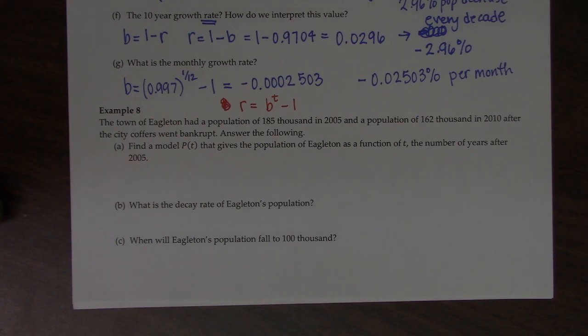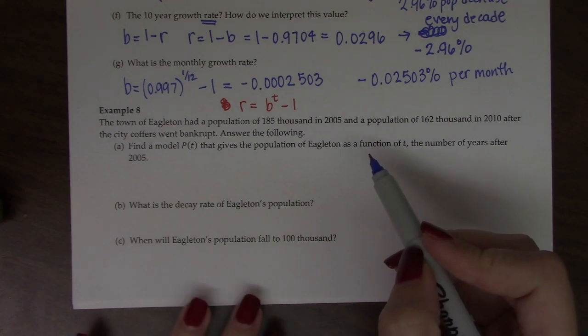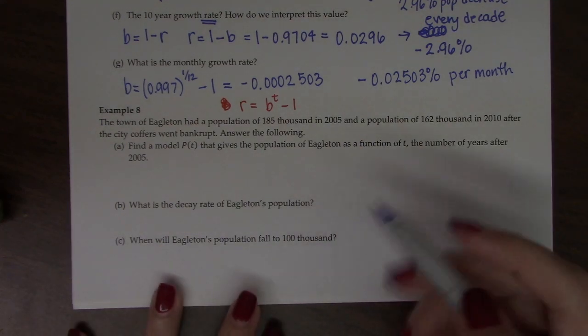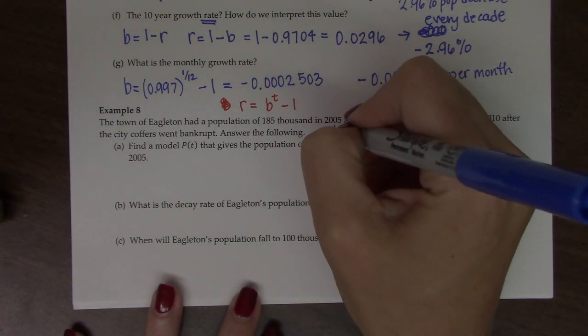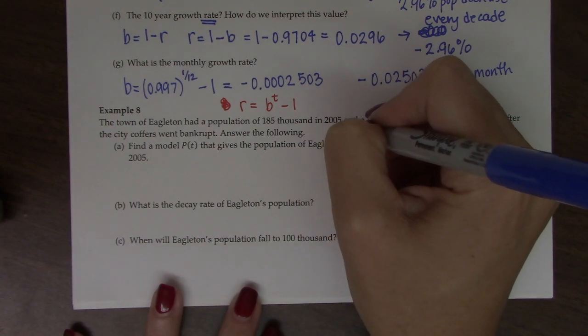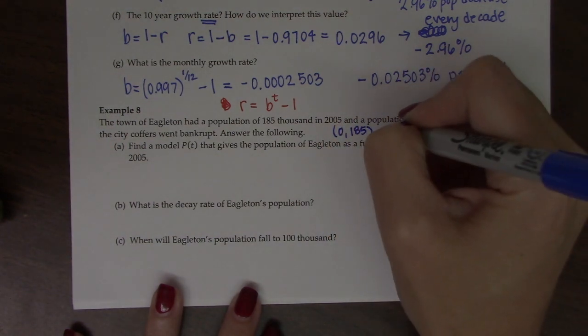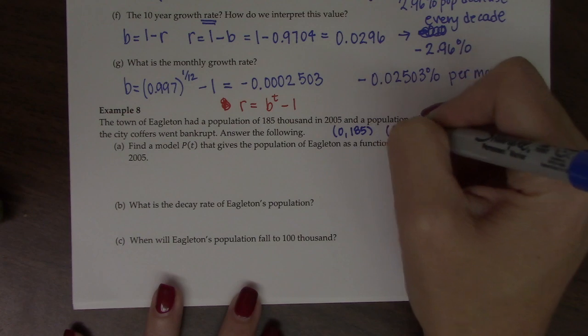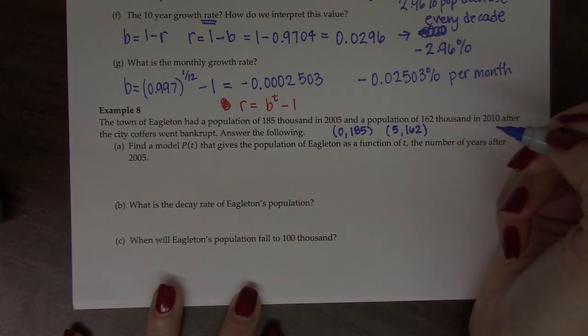This is actually the same formula that we use to do a growth factor in terms of two data points. So the initial data point was in zero. It was 185,000. And then five years later, it was 162.